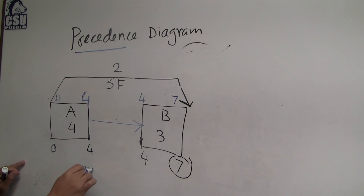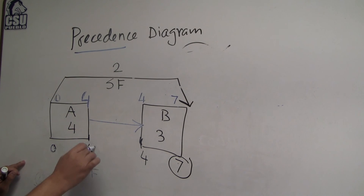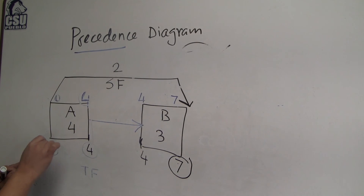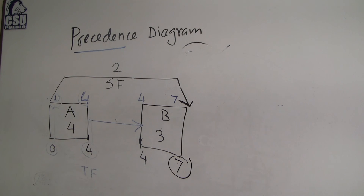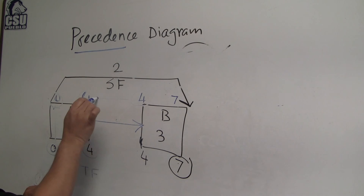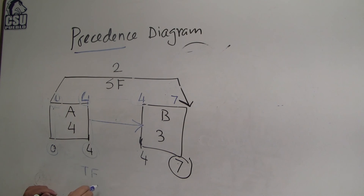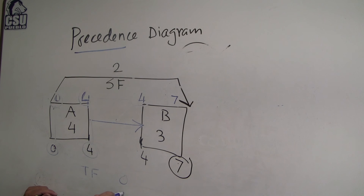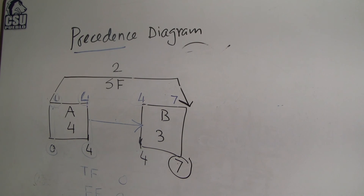Regarding float: total float is late start minus early start, or late finish minus early finish. Free float is the early start of the successor minus the early finish of the activity. So total float here is zero, and free float is also zero.